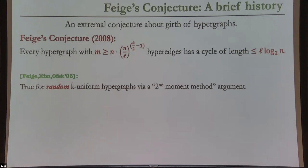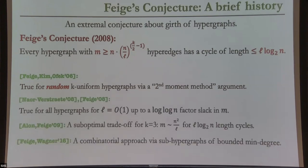They conjectured that an edge-disjoint cycle partition should probably exist, but established something weaker sufficient for their purposes. Over time Feige realized this kind of result should hold regardless of the clause structure — that's the motivation for his conjecture. There has been some progress over the years toward this conjecture.